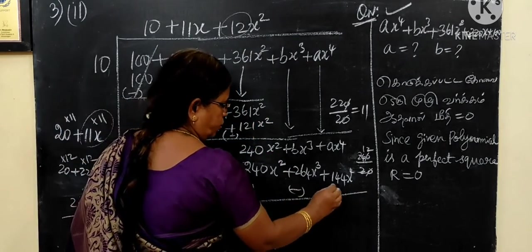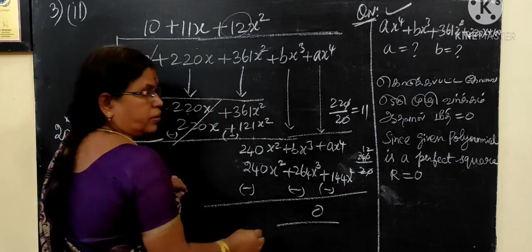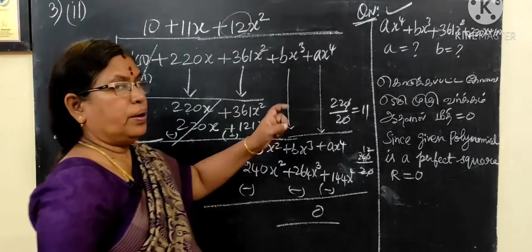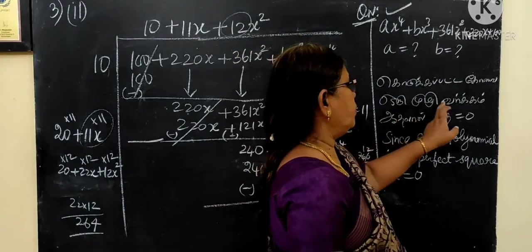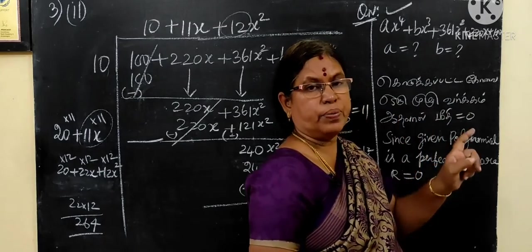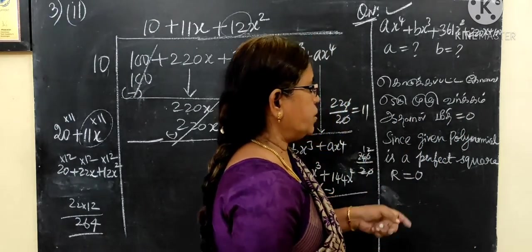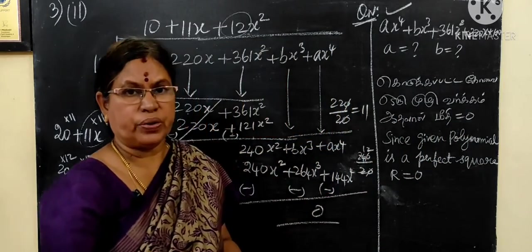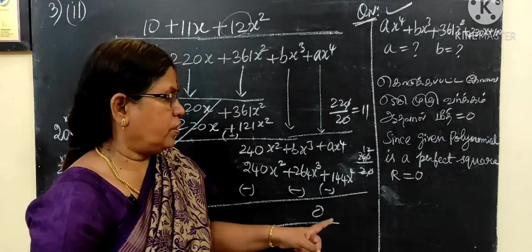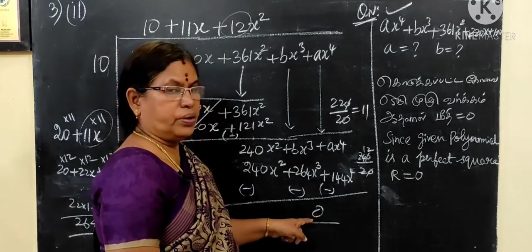Now, the remainder should be equal to 0. Since given polynomial is perfect, the remainder should be equal to 0. So r is equal to 0.